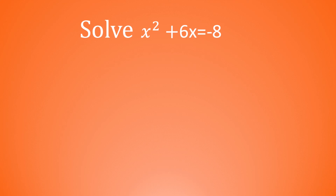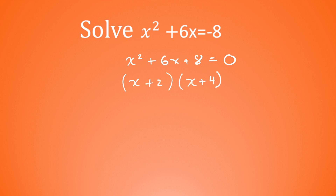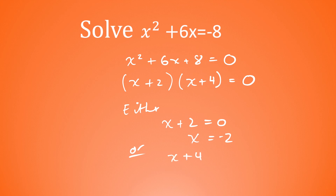So x squared add 6x is equal to negative 8. When we solve quadratics, we're used to them being equal to 0. So we need to rearrange when they're not. If we add 8 to both sides, we get x squared add 6x add 8 is equal to 0. We want factors of 8 that add to 6 — that is 2 and 4. So that factorizes to x add 2 and x add 4 equal to 0. Either x add 2 is equal to 0, in which case x is equal to negative 2, or x add 4 is equal to 0, giving x equals negative 4.